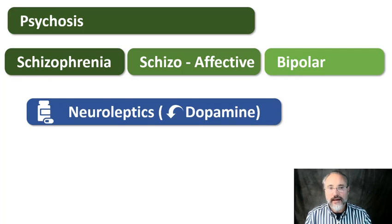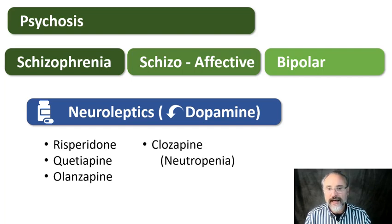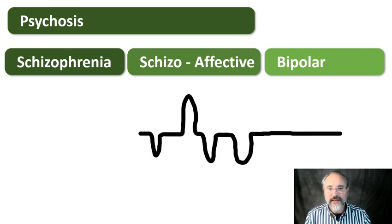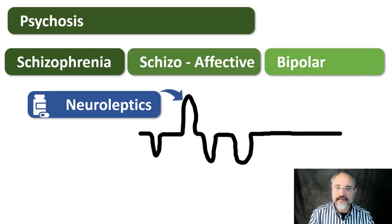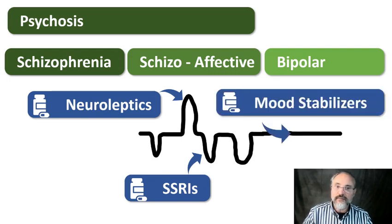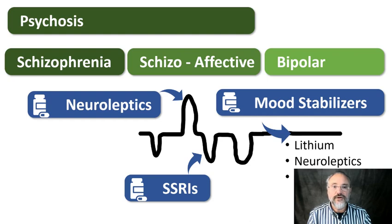Treatment for schizophrenia is neuroleptics — dopamine antagonists. The most commonly used are risperidone, quetiapine, and olanzapine. Clozapine works on negative symptoms but causes neutropenia and is only for specialists. For bipolar: when people go manic, give neuroleptics — olanzapine is most effective. When depressed, give SSRIs. When neither manic nor depressed but you want to keep them stable, use mood stabilizers. The star mood stabilizer is lithium, which works very well for 20 to 30 years until it hurts the kidneys. Anti-epileptics like sodium valproate or carbamazepine are also used to keep people stable.